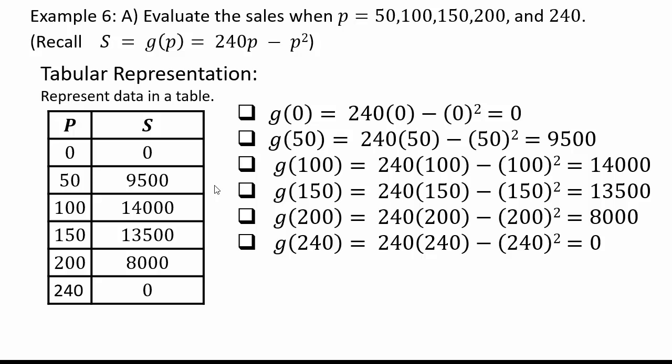Look at this. I got g of 0 is 0, g of 240 is 0. Looks like the price, the number of headphones you sold went up, up, up, and then it started going down again. So you would want to know what is the optimal price that we should have to have maximum sales.